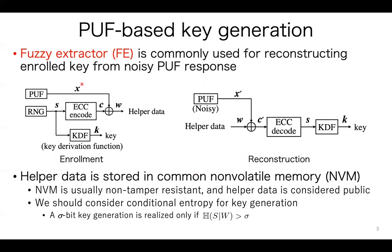This figure shows a block diagram of FE with code offset. The left figure is for enrollment and the right is for reconstruction. In enrollment, we generate random seed S using the random number generator, RNG, and enroll a cryptographic key using a key derivation function, KDF. KDF is usually realized by a cryptographic hash function such as KMAC, or universal hash such as Toeplitz hash.